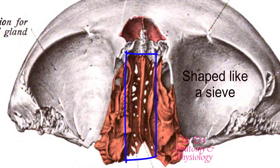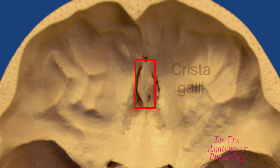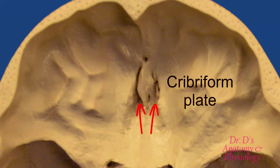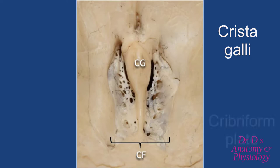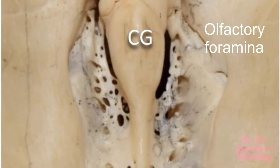In the intact skull, the ethmoid bone is not easily visible. One place where you can see part of it is in this interior view of the cranium — looking at the floor of the cranium, surrounded by the frontal bone, you can see the crista galli. On the sides of its base you have the cribriform plate. In a nicer photo of the same view, CG indicates the crista galli and CF brackets the cribriform plate, where numerous perforations — the olfactory foramina — are clearly visible.